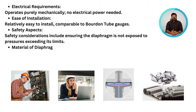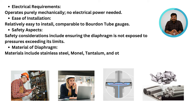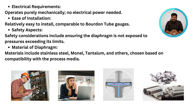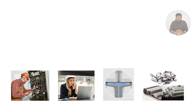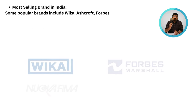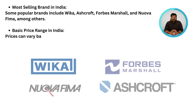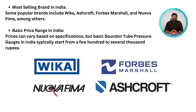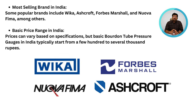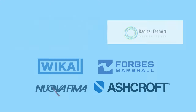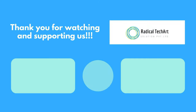Main materials used for diaphragm-type pressure gauges are steel, Monel, and others, with compatibility with the process media being key. Some popular brands in India include Wika and Marshalltown.